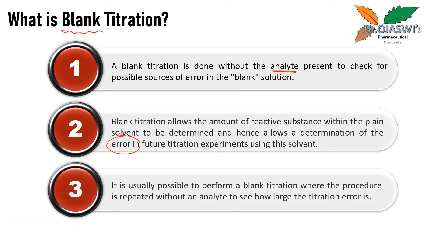It is usually possible to perform a blank titration by repeating the procedure without an analyte to see how large the titration error is. For example, deionized water is very slightly acidic and may affect the result of an acid-base titration. If one wants a highly accurate concentration, we should perform the blank titration to find out the concentration of H3O⁺ in the water and use it to correct the concentration of the analyte.